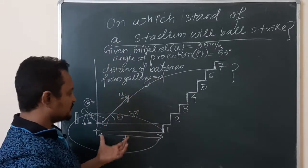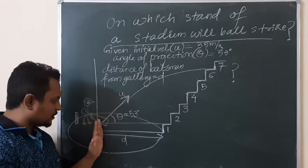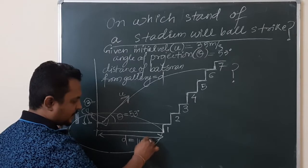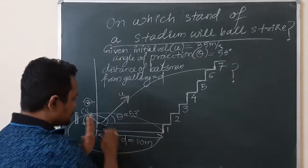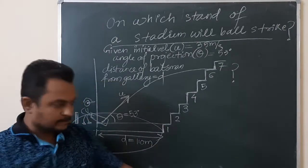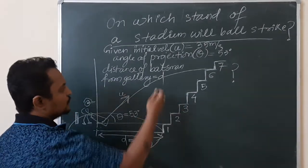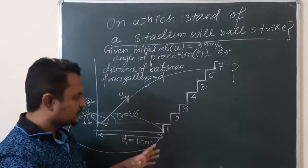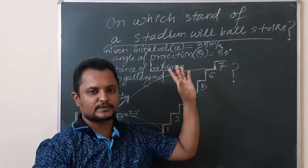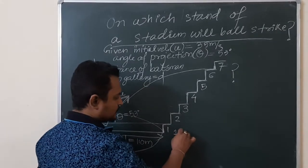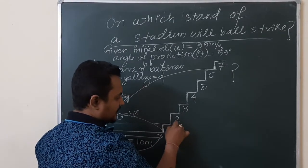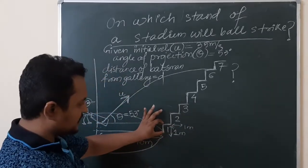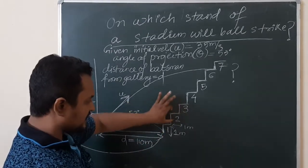The distance of the batsman from the gallery — meaning the point at which the bat hits the ball — from that point the distance to the gallery, let it be d, say 110 meters. If you know that distance, the angle of projection, the initial velocity, and the dimensions of the gallery steps — suppose each step is one meter high and one meter wide — you can solve this.